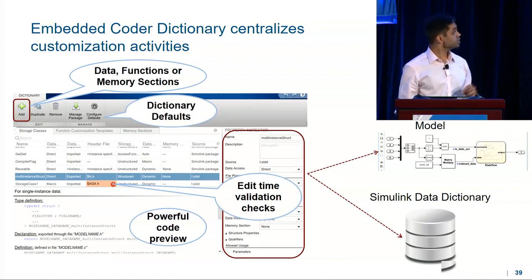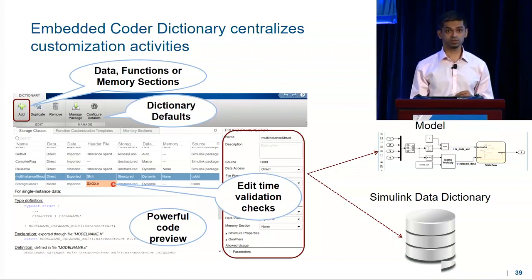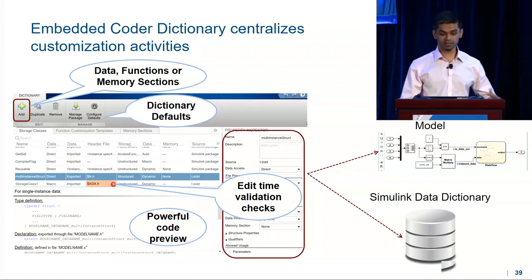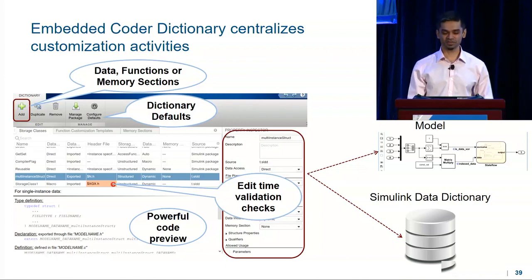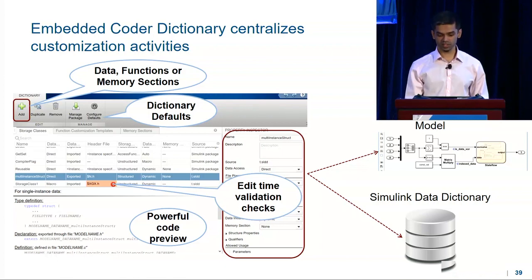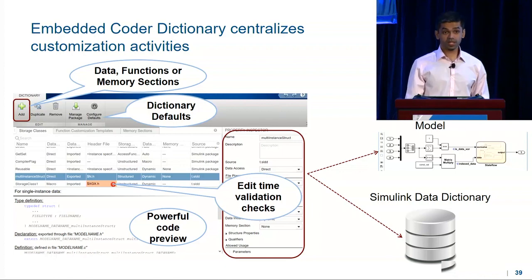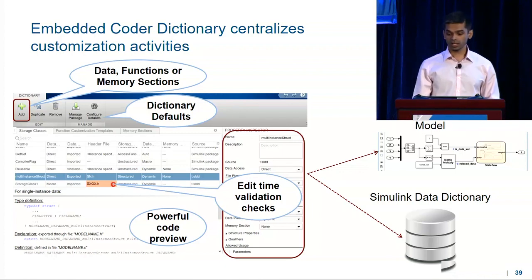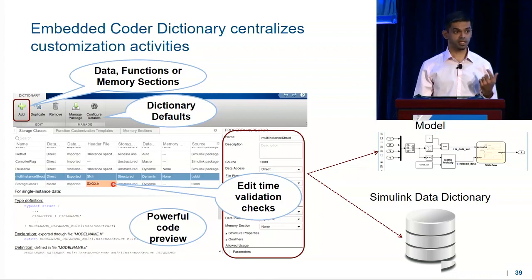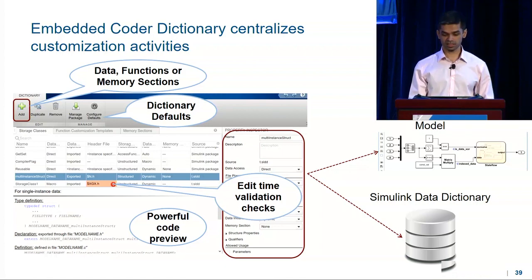In 18B, you can also set up dictionary defaults, so modelers get these defaults out of the box when they get started with a new model. With the embedded coder dictionary, you, as a tools engineer, can create a full set of customizations in hours, not days.